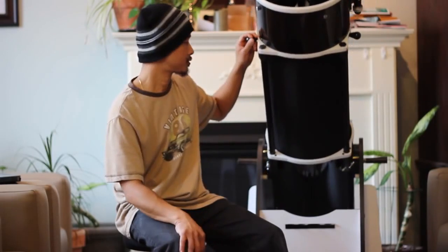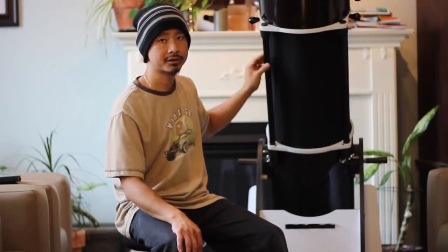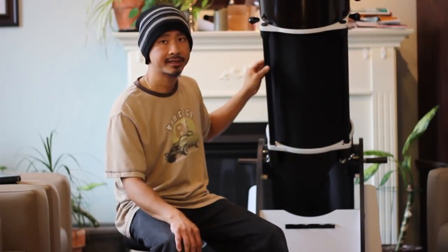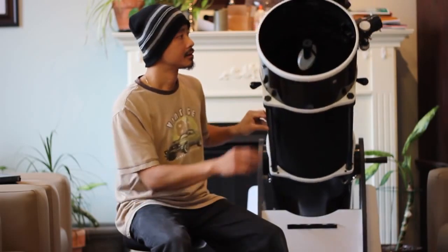When you have a telescope such as this Sky Watcher flex tube, it has an adjustable truss. So every time I collapse and expand it, the secondary can also be out of alignment.